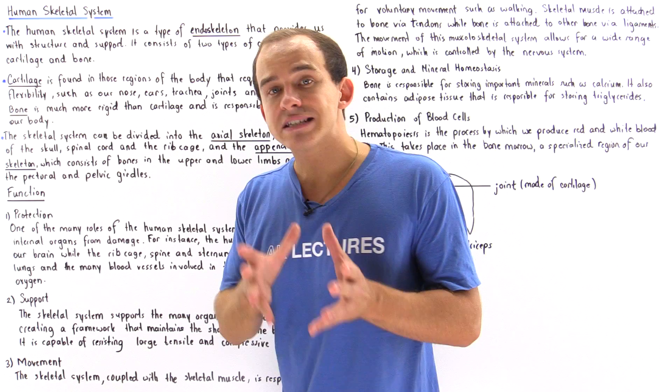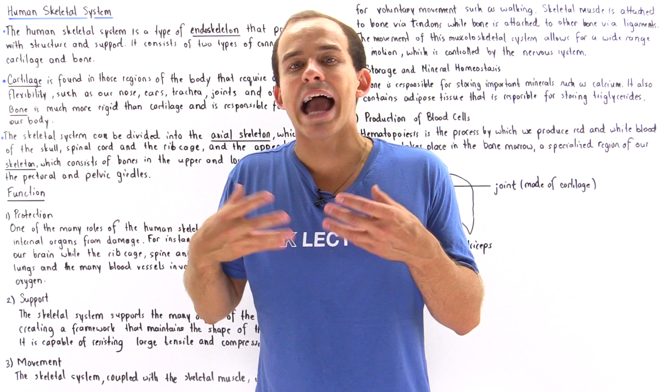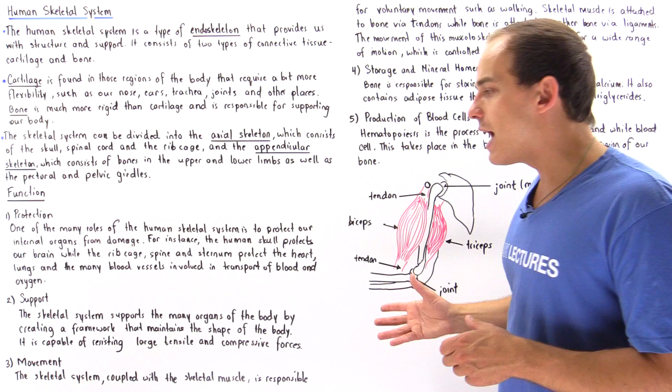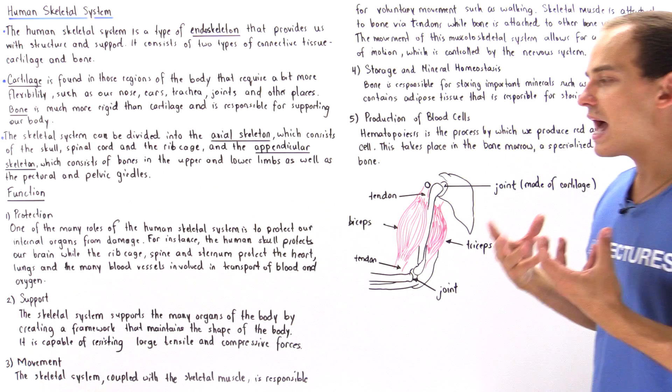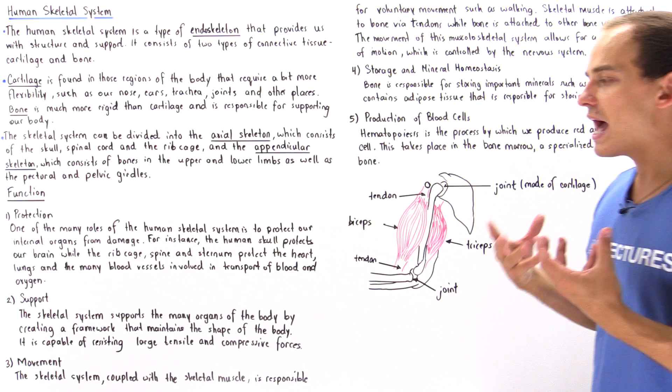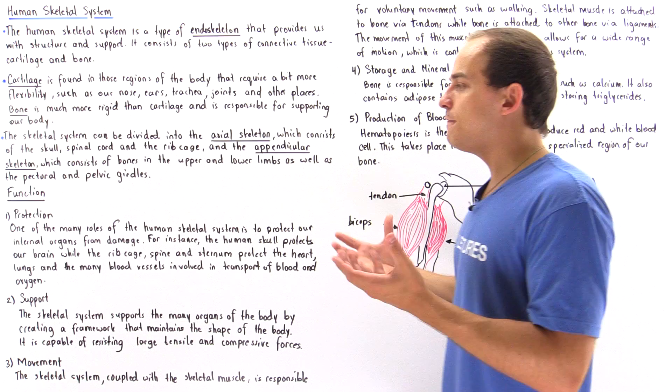Now what about the second function known as support? The skeletal system supports the many organs of the body by basically creating a scaffolding system. We create a framework that maintains the shape of the body. It is also capable of resisting tensile and compressive forces, and that's exactly what allows us to resist the different types of forces that we feel as a result of outside stimuli.